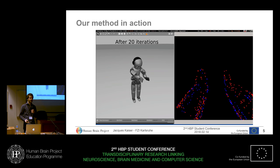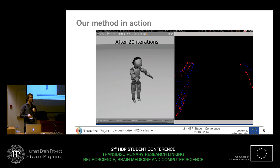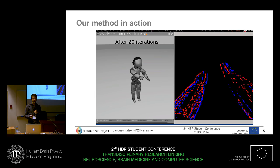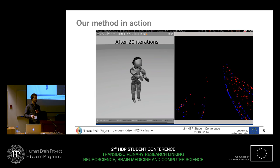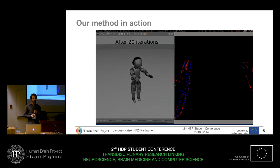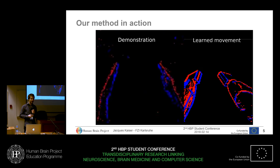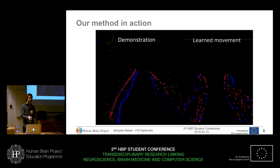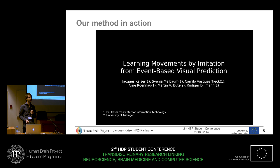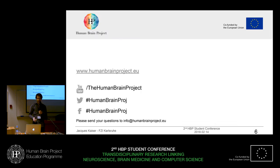Every time the robot tries an action, we reset it to its initial position and try another action. Here we are optimizing for 12 joints — the robot has 12 joints in the arms. Now you have the two motions at the end: the demonstration and the learned movements, which are quite similar to each other. Thank you very much.